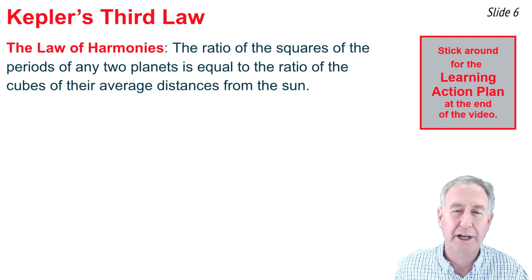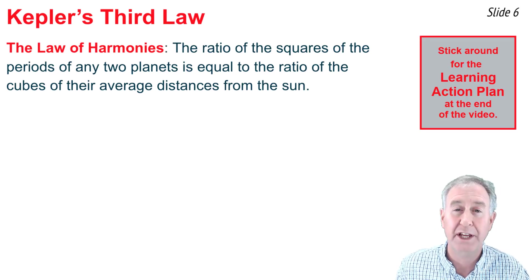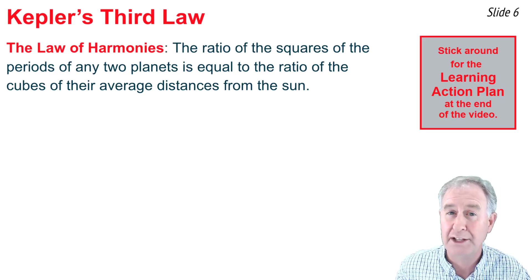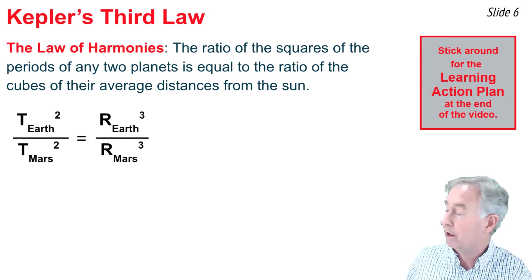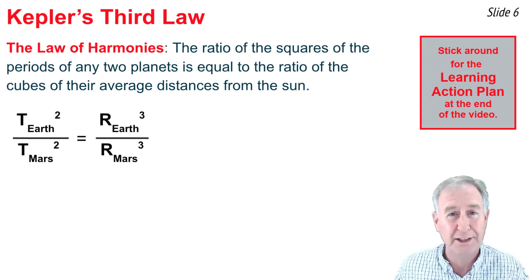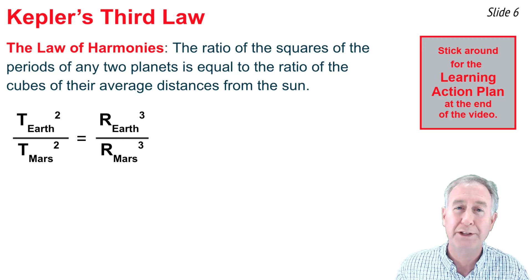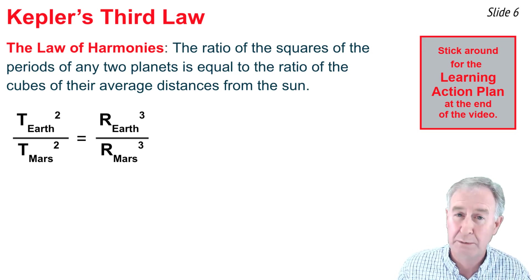If we were to take any two planets, let's just say Earth and Mars, and apply the law to those two planets, we could write the law as an equation that looks something like this. The ratio of the period squared to the radius cubed is the same.